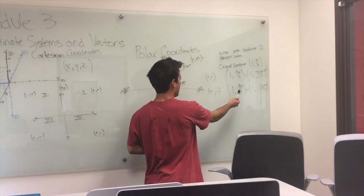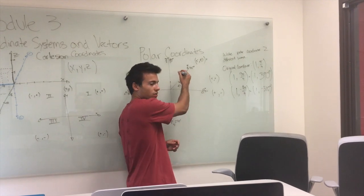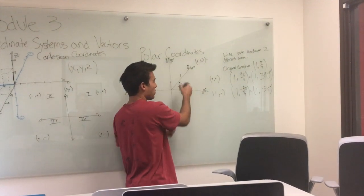And we also have going in a negative direction, so we can go 3 pi over 2 in the negative direction and another negative pi over 4 to get to the same place.